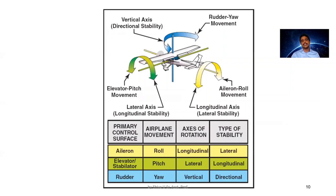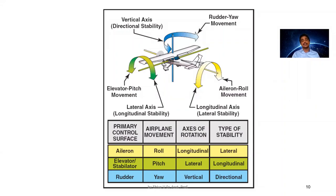In this image we can see the ailerons, elevators, and rudder movements. By making the ailerons move in opposite directions, we get the rolling motion on the aircraft.